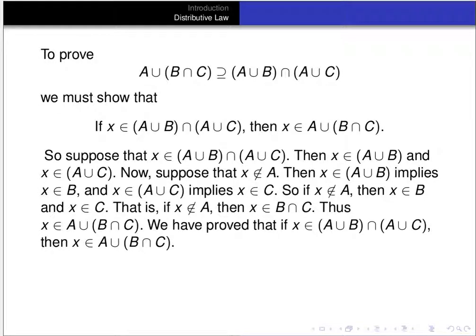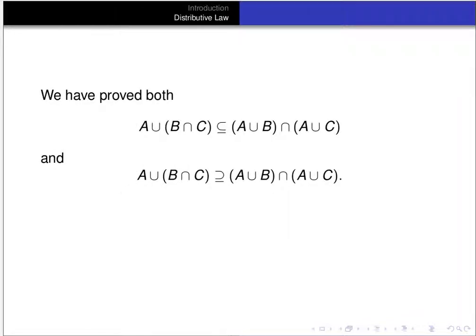We've proved that if x is in (A∪B)∩(A∪C), then it's in A∪(B∩C). Therefore (A∪B)∩(A∪C) is a subset of A∪(B∩C). We've proved both subset relations — the subset relation holds in both directions. The set on the left is a subset of the set on the right, and vice versa, so the two sets are equal. That's always what we must do when proving two sets are equal.